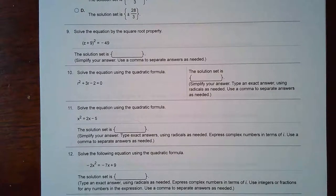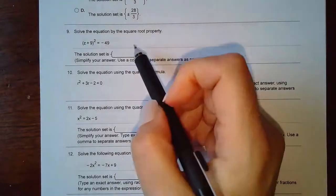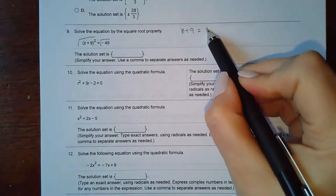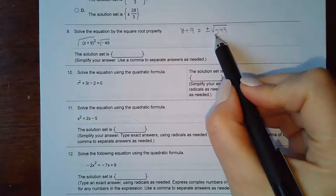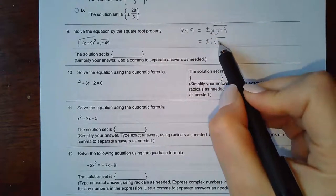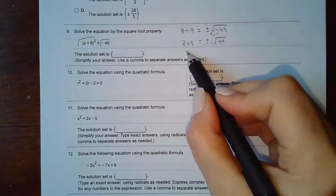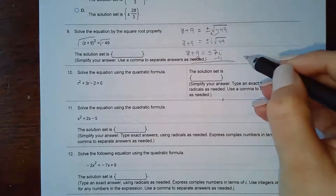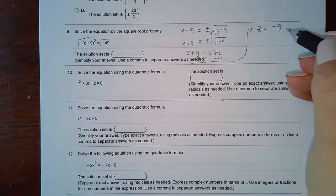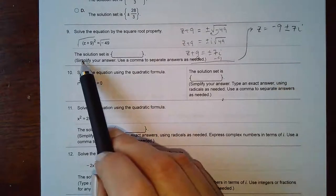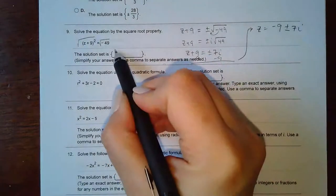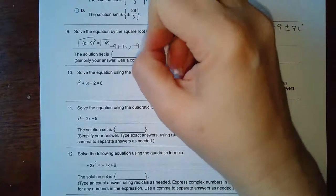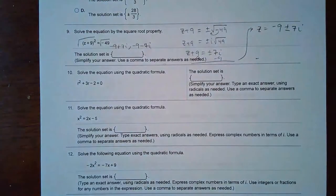Number nine says solve the equation using the square root property. We take the square root of both sides, so the square goes away leaving z plus nine. On the other side we get plus or minus the square root of negative 49. The negative comes out as an imaginary i, and the square root of 49 simplifies, giving us plus or minus 7i. Then we subtract nine from both sides — since these are not like terms, write minus nine in front of the plus or minus. So the two solutions are negative nine plus 7i and negative nine minus 7i.